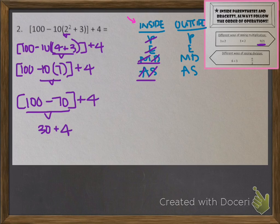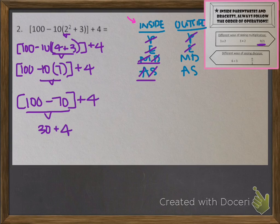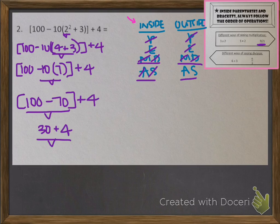I've done everything inside the brackets and crossed off all my PEMDAS letters for inside. Now I'm just looking at outside because there are no more brackets. Any more parentheses? No. Any exponents? No. Any multiplication or division? No. Any addition or subtraction? Yes — there is addition. So I do 30 plus 4, which is 34. And there's nothing left, so that's how we solved that one.